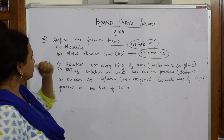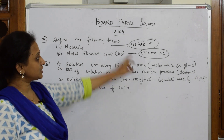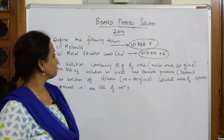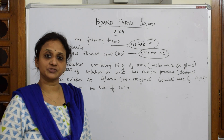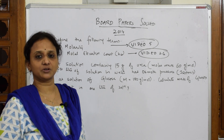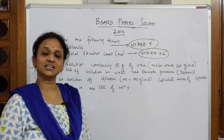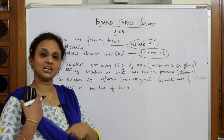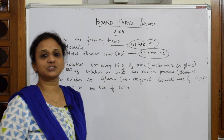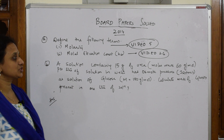They've asked us to define the following terms: molarity — I've already done this in video number 5, please check that. Next is molar elevation constant, which is nothing but your ebuloscopic constant, that is K_B. In video number 26 I have clearly explained what is molar elevation constant, the ebuloscopic constant. Please watch the video for a clear understanding of the concept.